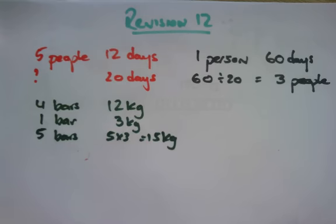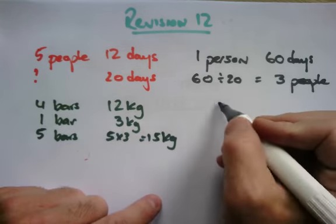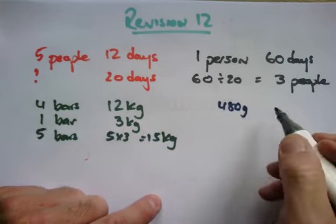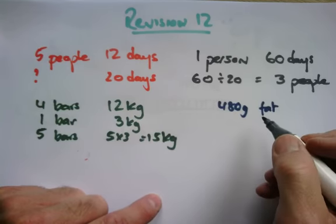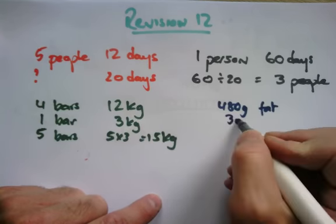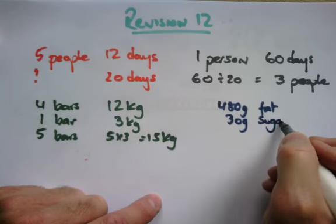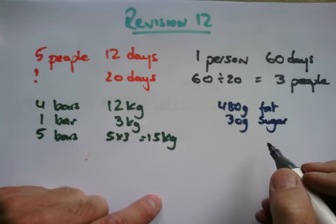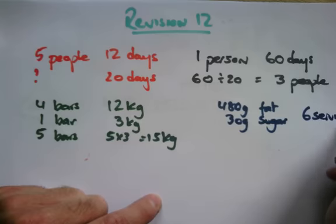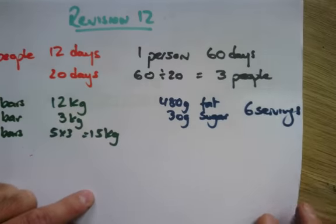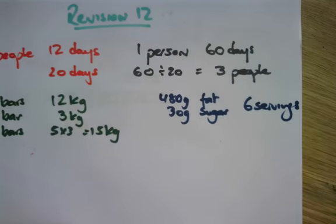And then it says, a recipe for tripe says you need 480 grams of fat, you need 30 grams of sugar. I know, I totally made all this up guys, I don't even know what tripe is. For six servings. Okay, so for six servings.